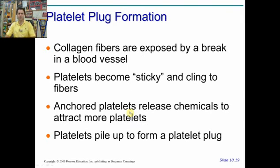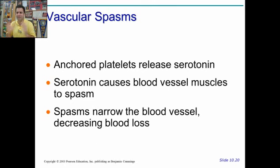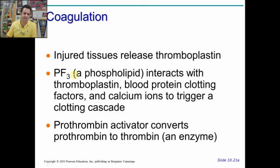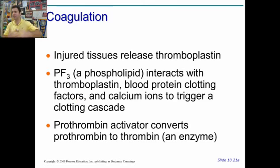Let's continue going through. Collagen fibers are exposed by a break in a blood vessel. Platelets become sticky and cling to the fibers, then release serotonin to recruit more platelets, piling up to form a platelet plug. Vascular spasms occur also due to the serotonin, causing vasoconstriction and shrinking of the vessel wall, decreasing blood loss. Then coagulation occurs — the damaged tissues release thromboplastin, which interacts with PF3, and together with other factors and calcium, triggers a cascade of factor-to-factor reactions.